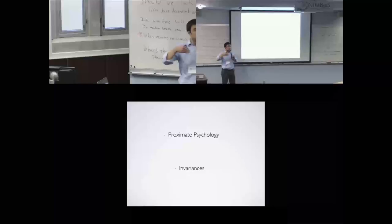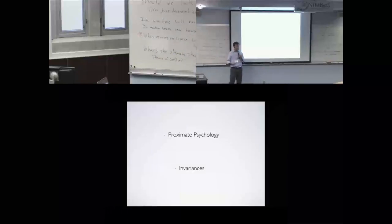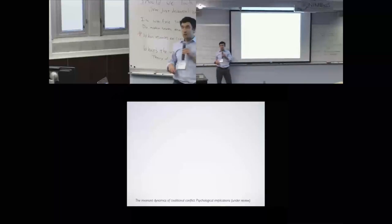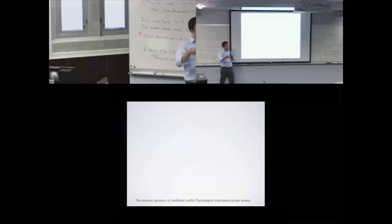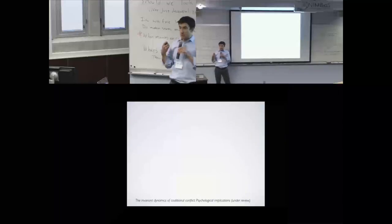What natural selection does is it picks out invariances—those dynamics that are recurrent, true for every generation, true for many conflicts, those things that don't vary. What I'm going to present today is an attempt—it's a paper I posted on the group website—just a five-minute summary of an attempt to start thinking mechanistically about what may be some of the invariances that the psychology actually uses.